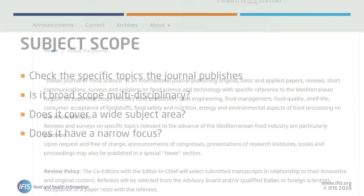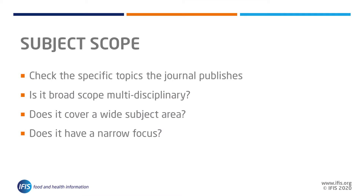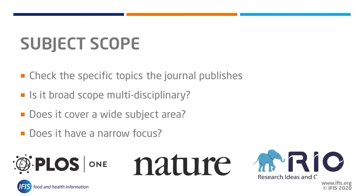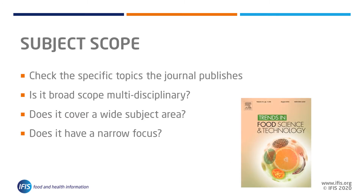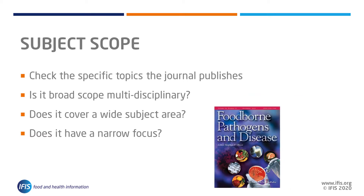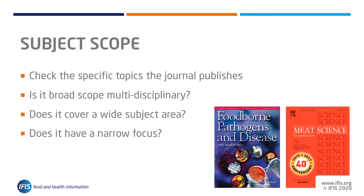Important dimensions to the aims and scope include subject scope. This first suggestion may seem obvious, but is an aspect which many authors misinterpret, as evidenced by the rate at which papers are rejected. Check the specific topics the journal publishes. Is it a broad scope, multidisciplinary journal without any specific subject focus, such as the open access journals PLOS, Nature, Rio, and many others? Does it focus on a specific wide-ranging domain, such as Trends in Food Science and Technology? Or does it have a very narrow focus for a specific field, such as Foodborne Pathogens and Disease or Meat Science?